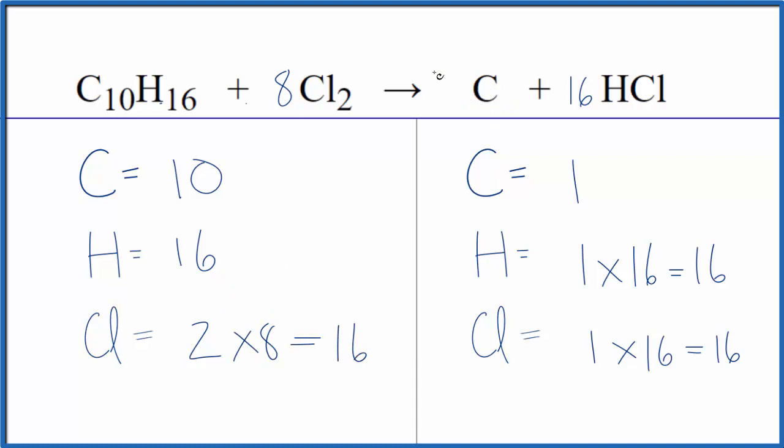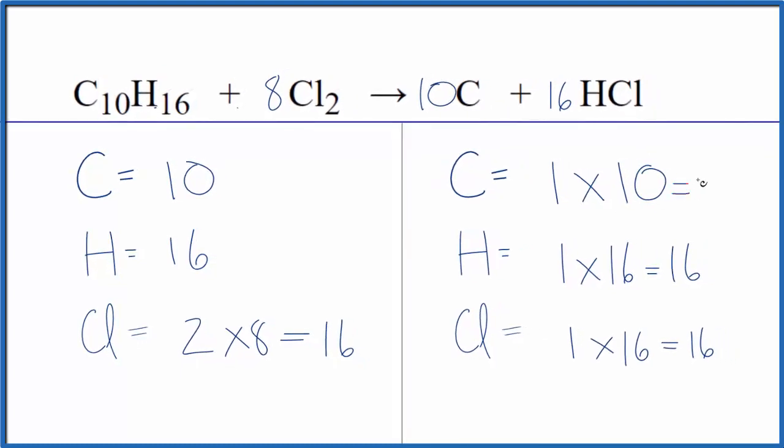We said the carbon is all by itself, so we just put 10 here, 1 times 10, that only changes the carbon. We get 10 of those. We're done. This equation is balanced.